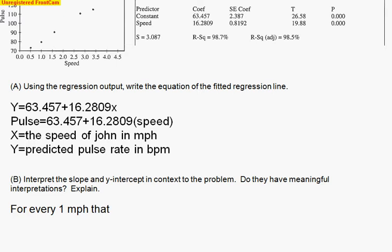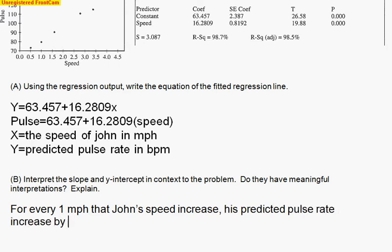For every 1 mile per hour that John's speed increases - so we're talking about how his x value goes up by 1, that's speed. Speed is the x. Speed is always - x is always the 1 when you think about slope. So for every 1 mile per hour that John's speed increases, his predicted - don't forget that word predicted - pulse rate increases by 16.2809. Again, don't forget units, beats per minute. So that's a nice way to describe it very easily and very simply. For every 1 mile per hour that John's speed increases, his predicted pulse rate increases by 16.2809.